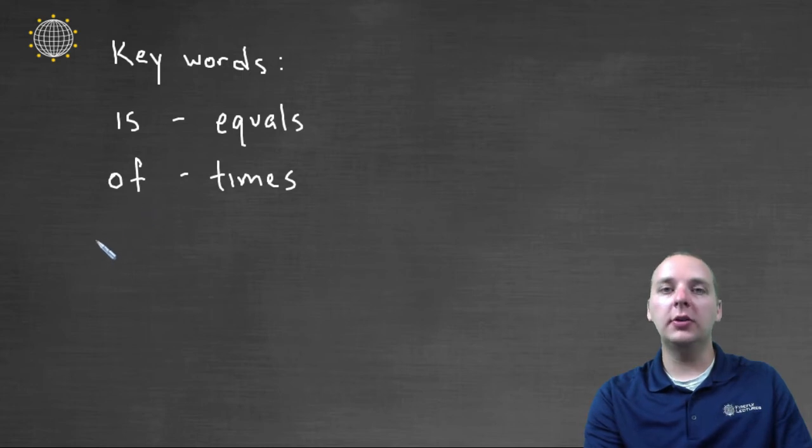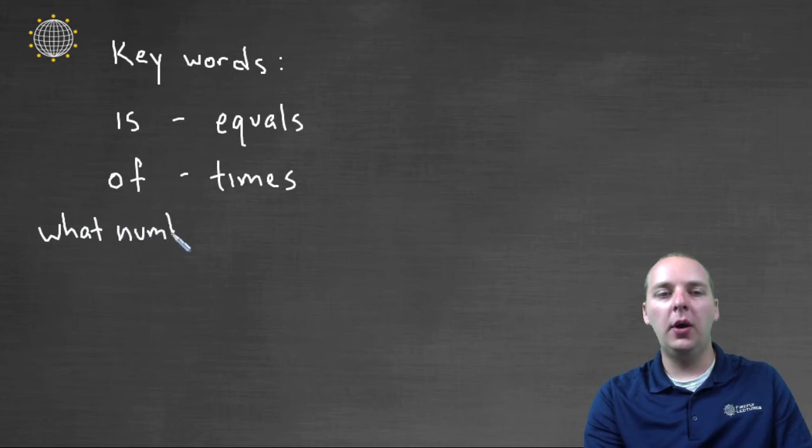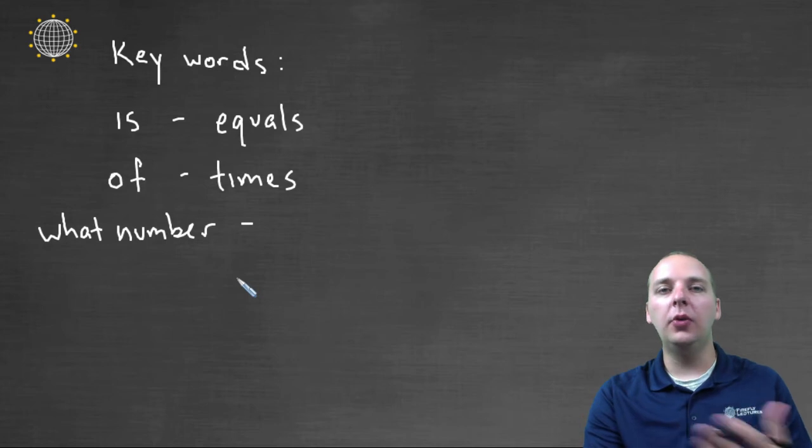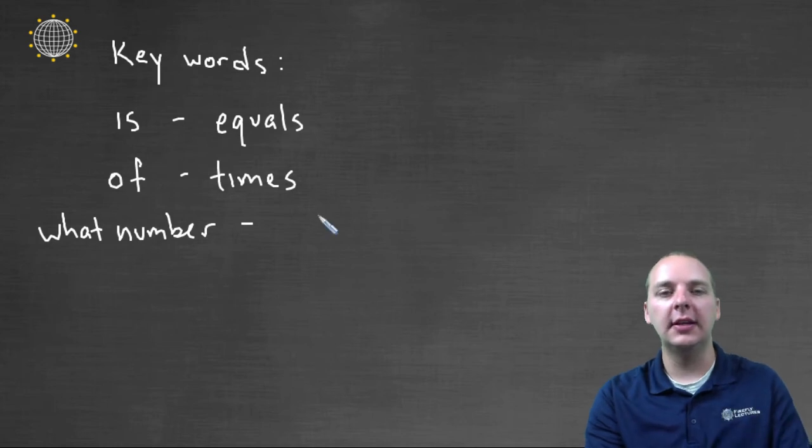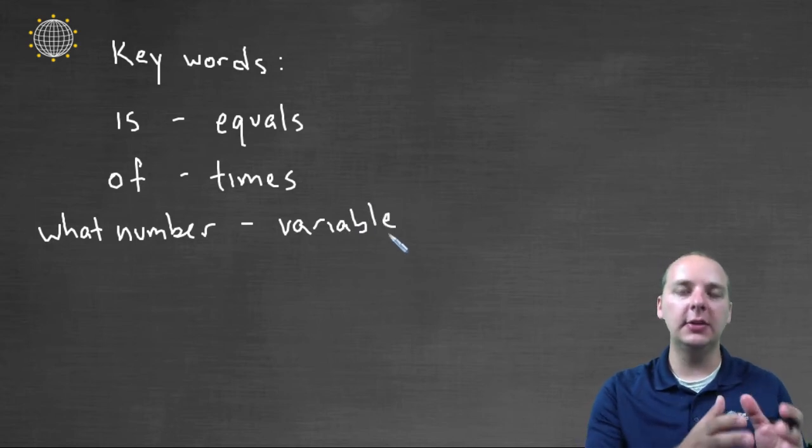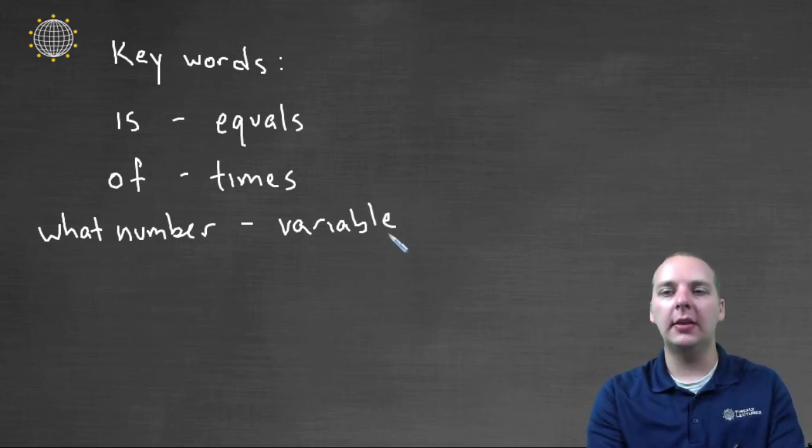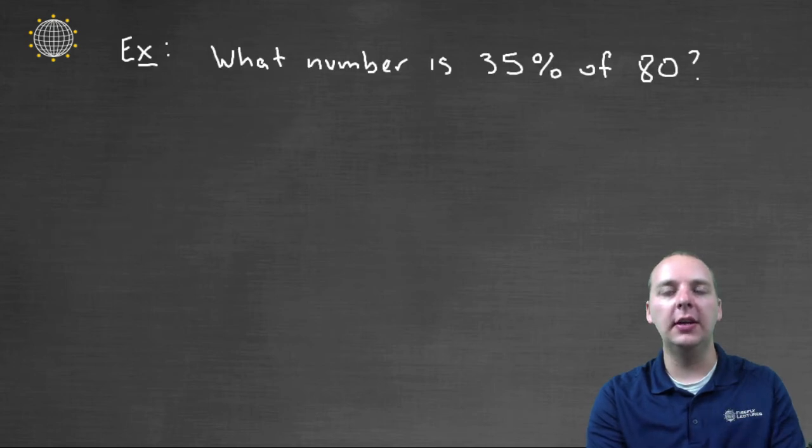And also a lot of times you'll see this phrase either like what number or what percentage. And that's indicating a value that we don't know. If you don't know it, you're going to say what number does this or what value is this or what percentage is this. And that's equivalent to a variable. So using these keywords, we can translate English sentences into math expressions and equations very easily.